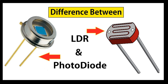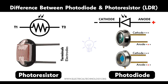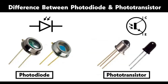Medical devices: Pulse oximeters measure blood oxygen saturation by detecting the light absorption characteristics of oxygenated and deoxygenated blood. Blood glucose meters utilize photodiodes to measure light reflected from a test strip that reacts with a blood sample, providing glucose-level readings. Photodiodes are also used in medical imaging modalities including X-ray and PET scanners to detect light signals generated by radioactive tracers or X-rays.